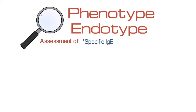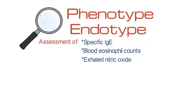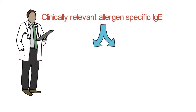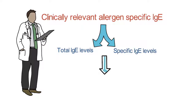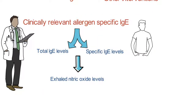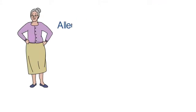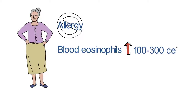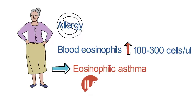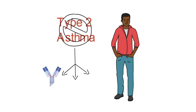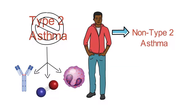When identifying an asthma phenotype or endotype, assessment of specific IgE, blood eosinophil counts, and exhaled nitric oxide levels can be helpful for driving further therapies, including biologics and other interventions. For example, if you can identify clinically relevant allergen-specific IgE through total IgE levels or specific IgE levels, supported by exhaled nitric oxide levels, then patients may have allergic asthma or meet criteria for allergic bronchopulmonary aspergillosis. If patients don't have clinically relevant allergy, but they still have blood eosinophils greater than 100 to 300, then they may have eosinophilic asthma that would benefit from treatment with specific IL-5 blockers. Patients who don't have evidence of type 2 asthma through IgE, exhaled nitric oxide, or eosinophils may have non-type 2 asthma and so benefit from other therapies.